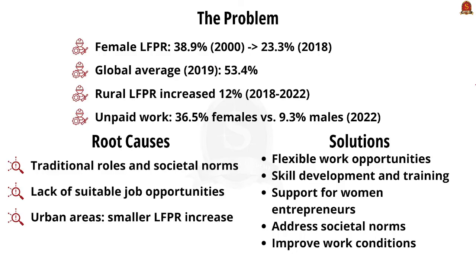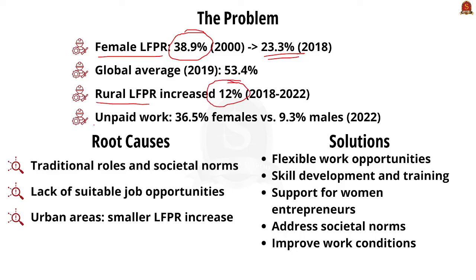India's female labor force participation rate saw a significant drop from 38.9% in 2000 to 23.3% in 2018. Despite this decline, rural areas showed a positive trend with a 12% increase in female labor force participation. However, many women remain engaged in unpaid family work, highlighting the need for targeted strategies. Women's employment choices are often limited by traditional roles and societal norms.